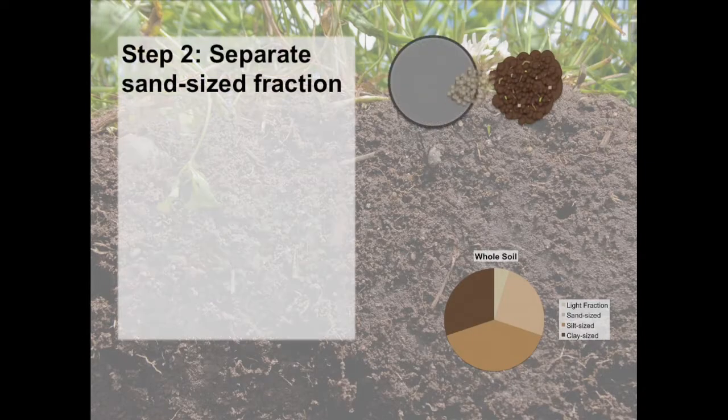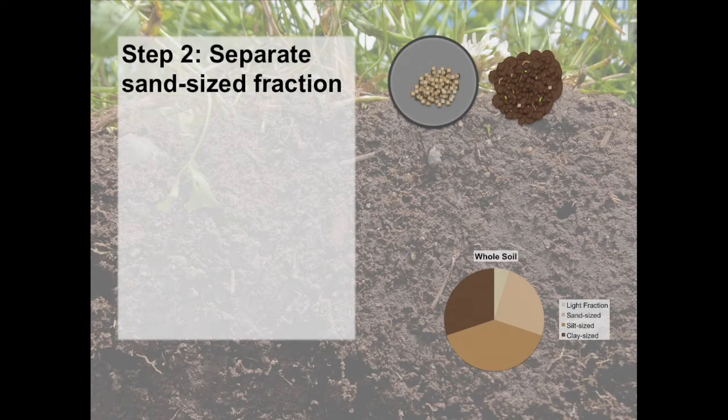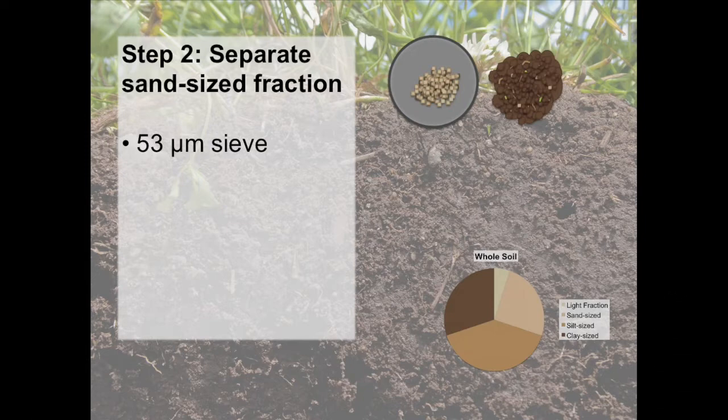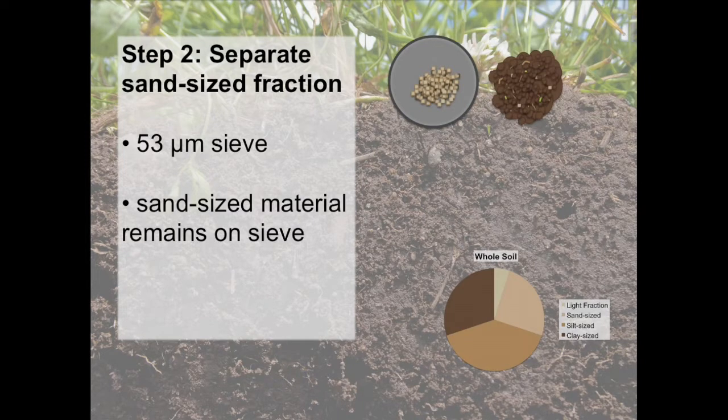Step 2. Isolate the sand-sized fraction by sieving. While our first step separated fractions based on density, this step uses differences in size to separate fractions. Sand-sized material is greater than 53 micrometers, so we will use a 53 micrometer sieve to separate the sand-sized fraction from the silt and the clay-sized fractions. The sand-sized material will remain on top of the sieve, while the silt and clay-sized material will go through.